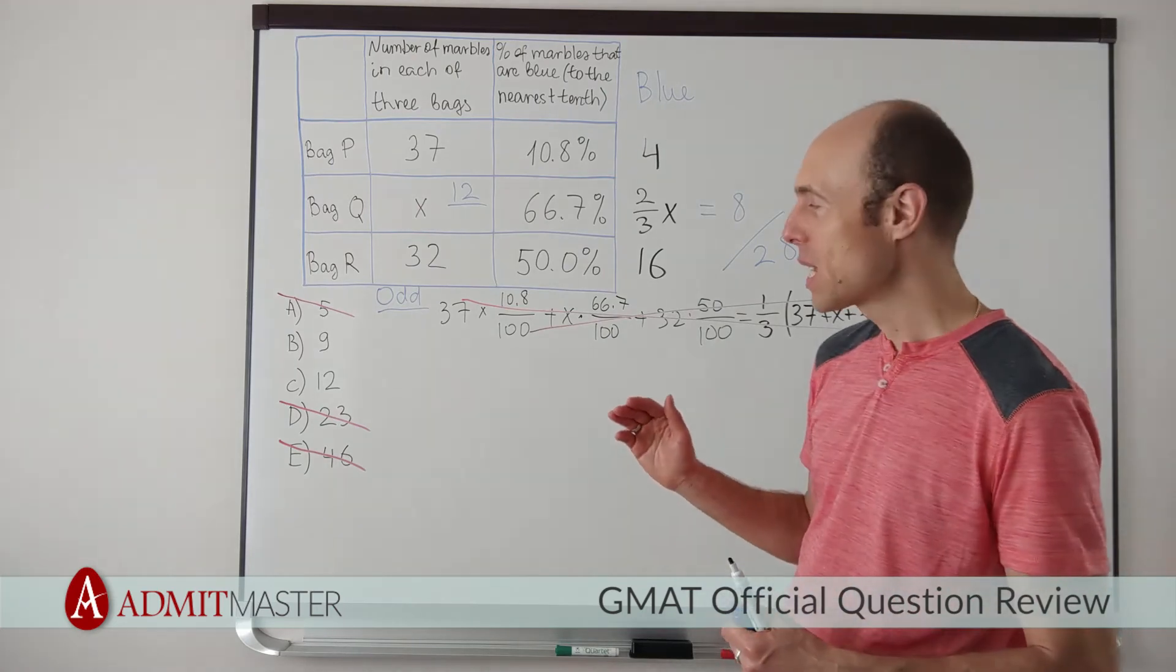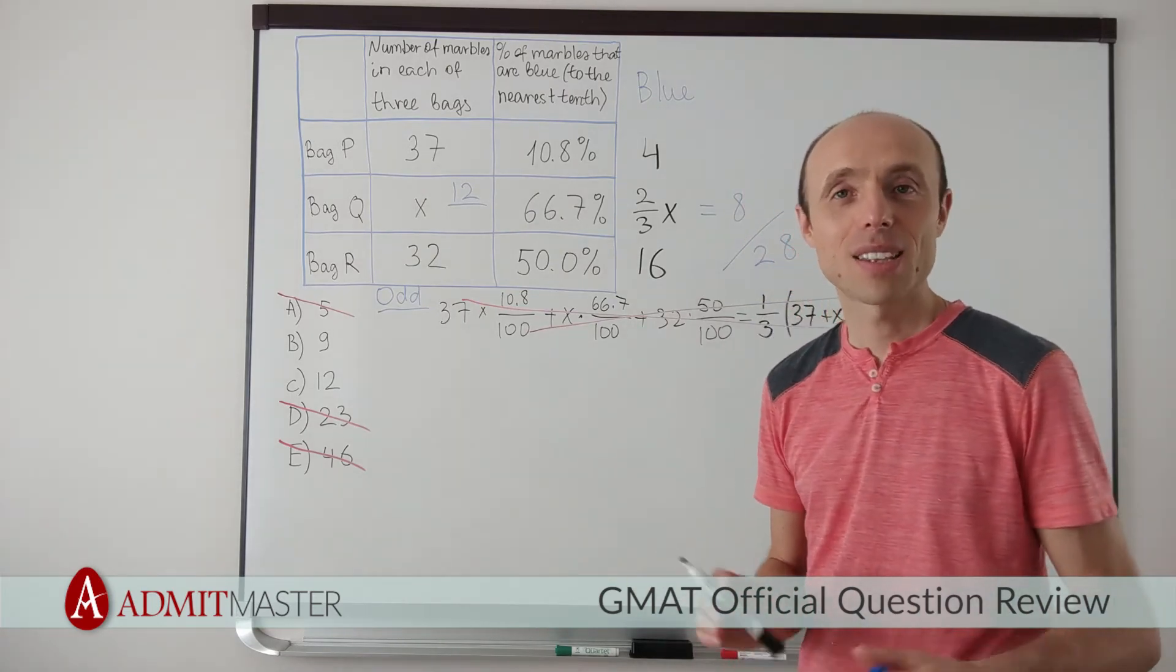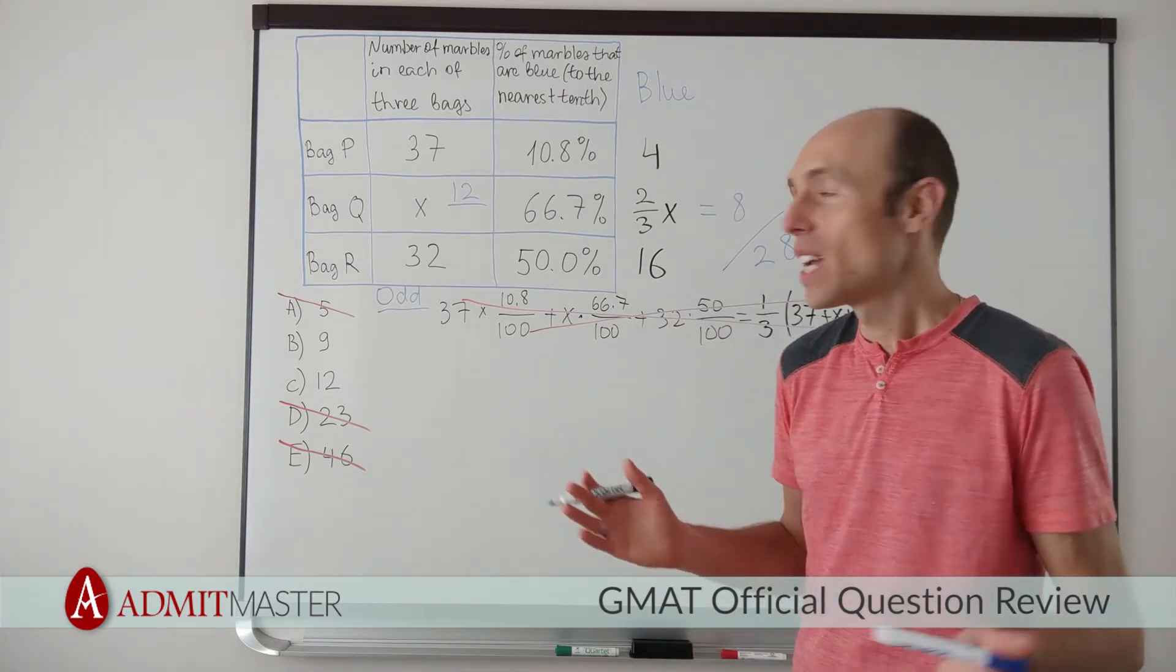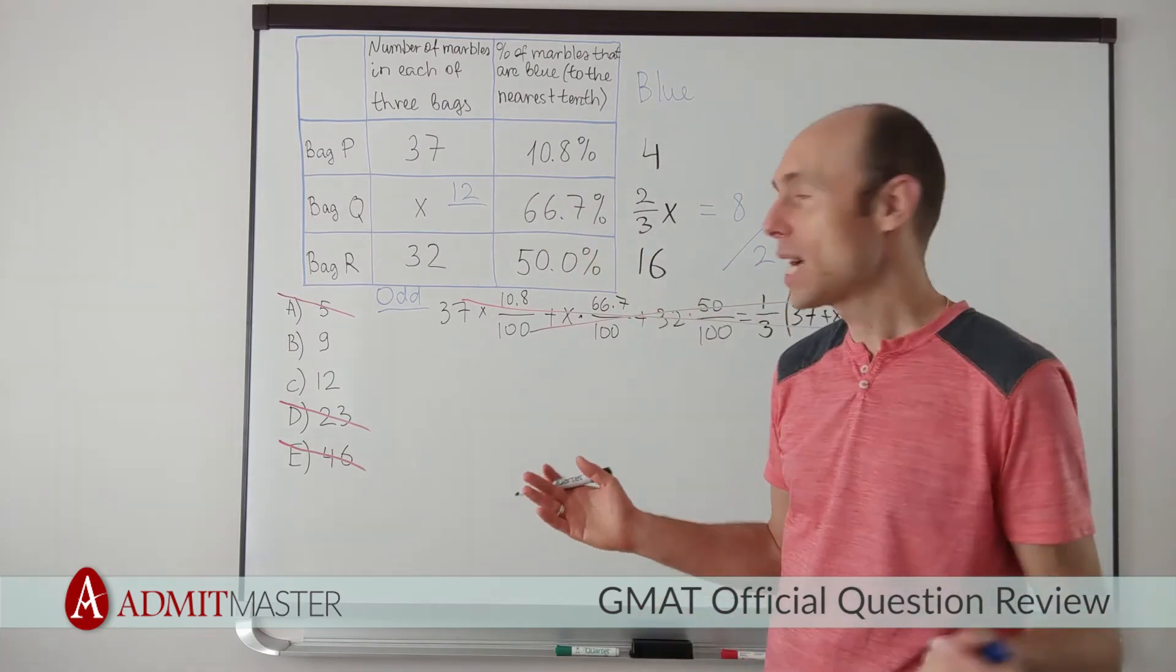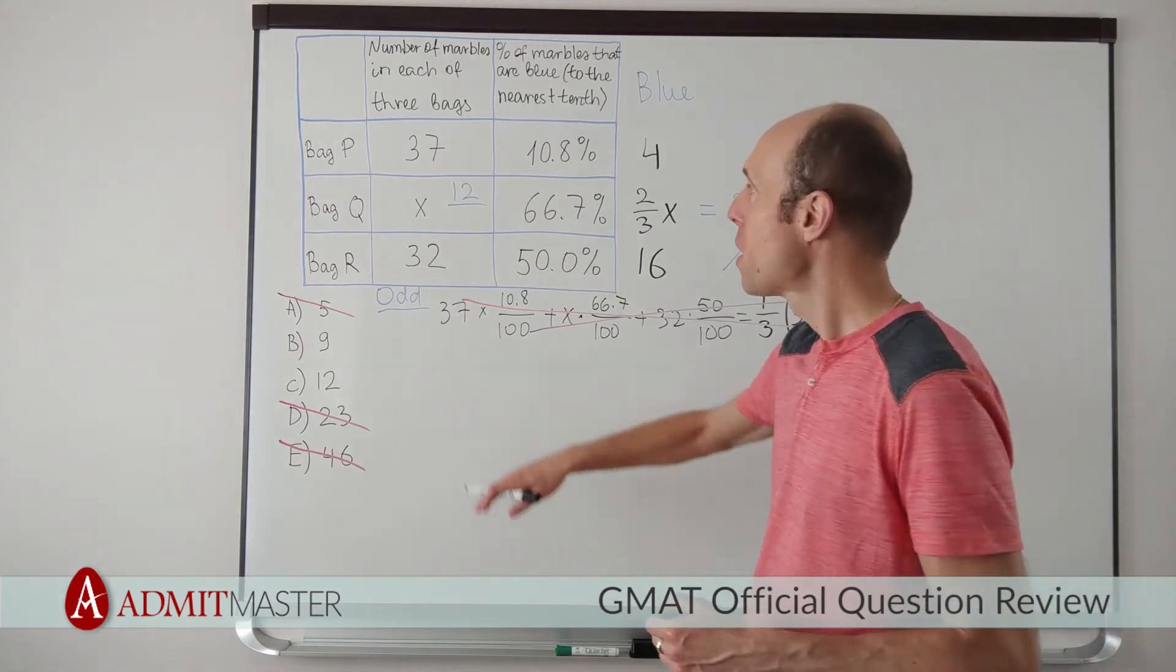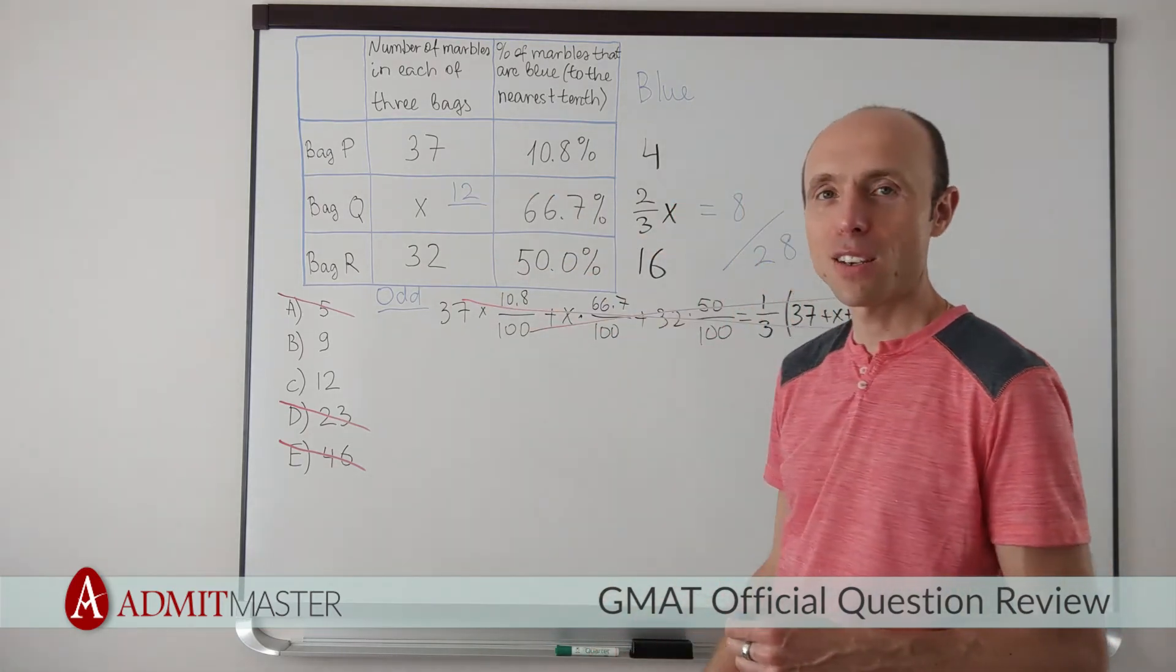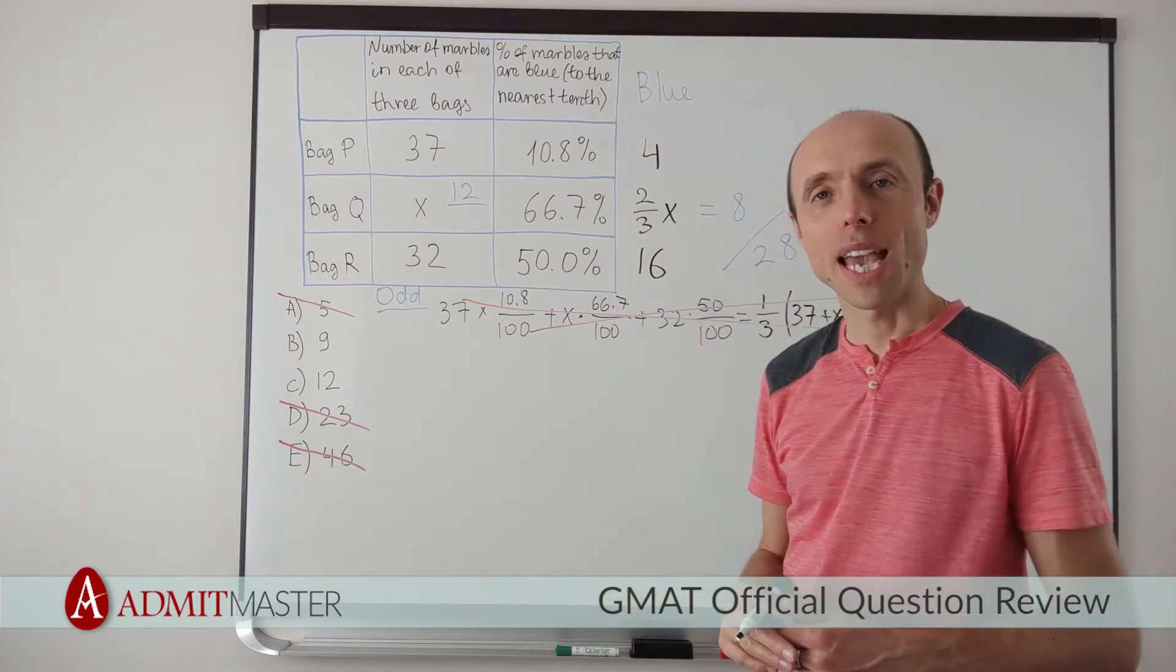So what that tells me is that C cannot be the right answer. Things just don't work out. Now, if you're interested in actually calculating that number, we can do that. 32 plus 12 is 44, plus 30 is 74, plus 7, that is going to be 81.